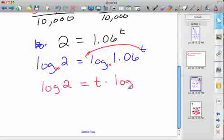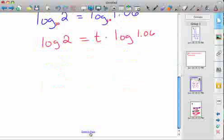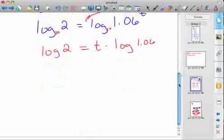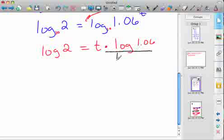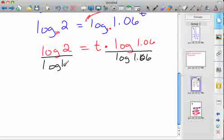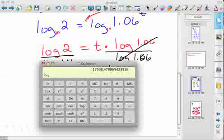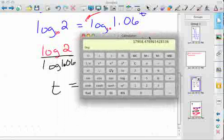So log 2 equals t times log 1.06. Now about any 8th grader could solve this. You've got it, it's a one step problem now. To solve, to get t by itself, we need to divide by log 1.06. So when you divide one side, you divide the other side, and here they cross out and become 1, and so t equals log 2 divided by log 1.06.